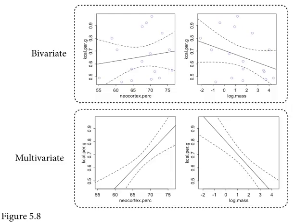Brainier species produce richer milk. Heavier species produce less rich milk. But unfortunately, across primate species, being brainy is correlated with being big. Apes are the big problem in the dataset — apes produce more milk but are also heavier, and these things are antagonistic across species. The model figures this out through partialing out: you regress mother's mass on neocortex percent, see the variation left over, and that remaining variation is still correlated with milk energy.